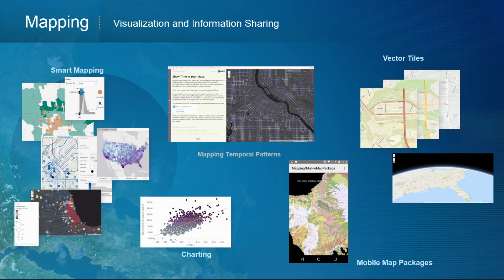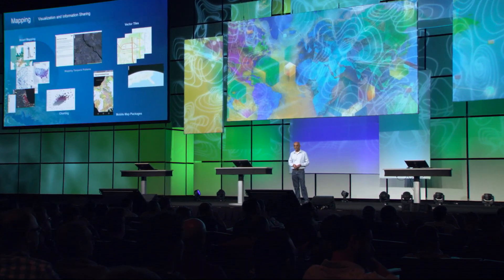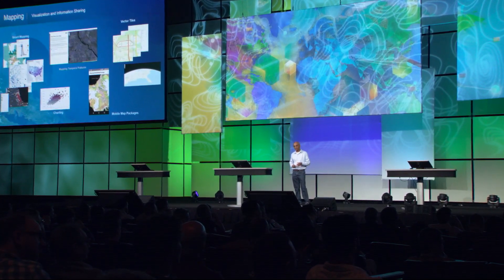Mapping and visualization is key — both for presentation and understanding. Smart mapping is a real focus because it helps people understand their data through exploration before drilling into deep analytics. Time is an area of focus, and we've also been working on vector tiles in both 2D and 3D, as well as mobile map packages.